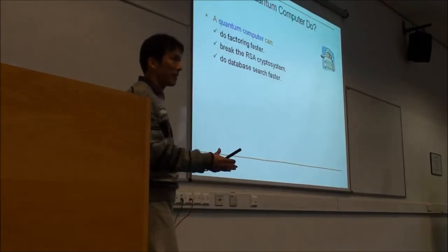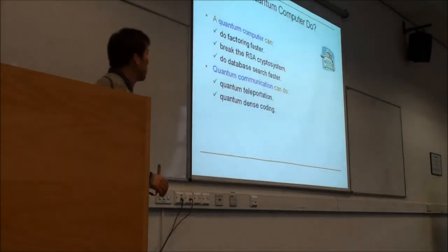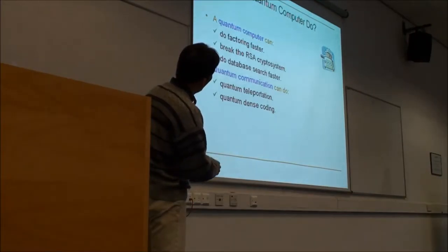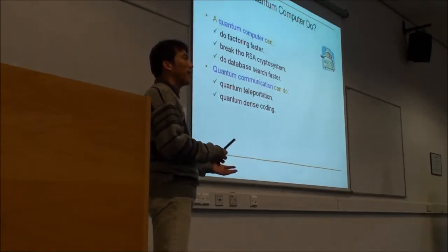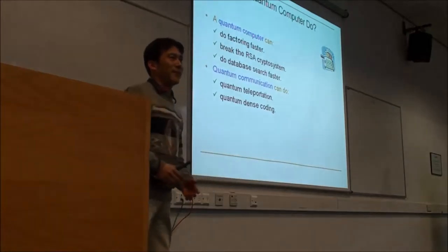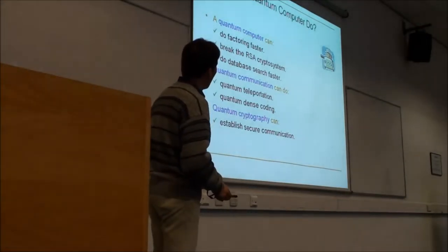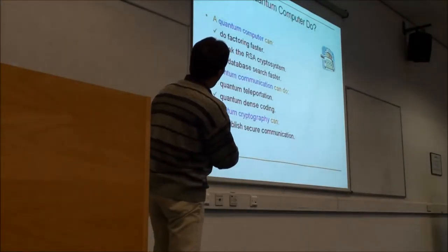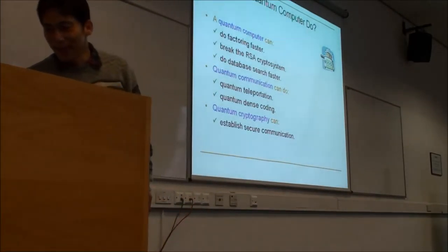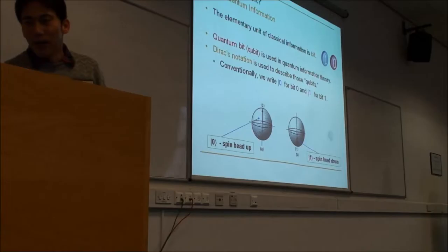We can also do database search faster than the normal computer. Quantum communication can do quantum teleportation — this is the way you can actually send quantum information without sending physical objects. The Einstein didn't like this idea. And quantum cryptography can do some secure communication — that's the topic we're going to cover.